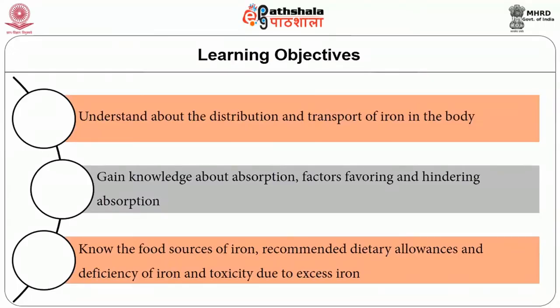Iron is essential for synthesis of hemoglobin and general metabolism. The human body has 2.5 to 4 grams of iron, and the amount present is dependent on various factors like gender, age, nutritional status, general health, and iron stores. By the end of this session, students will be able to understand about the distribution and transport of iron in the body.